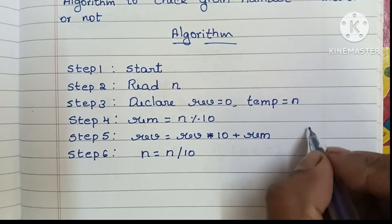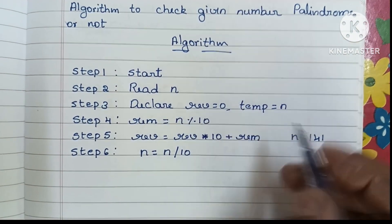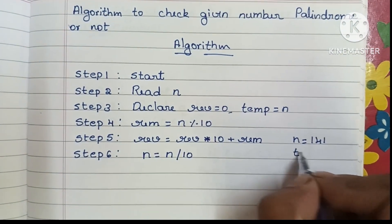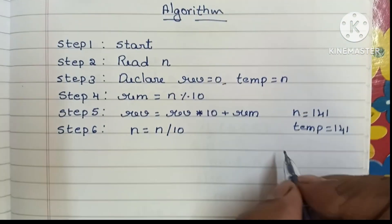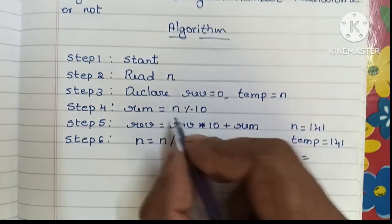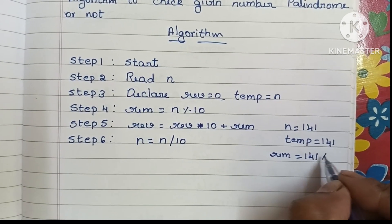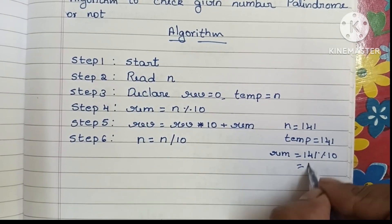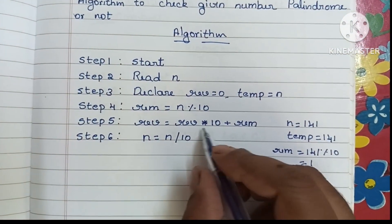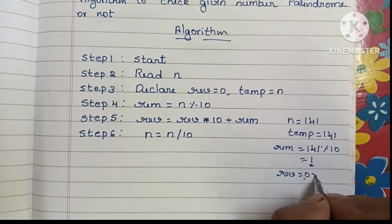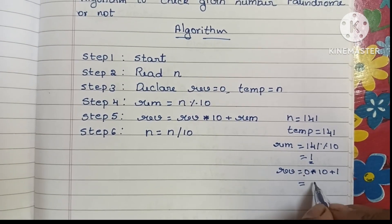For example, consider n equal to 141. We declare reverse equal to 0 and temp equal to 141. Now find the remainder: 141 modulo 10 gives remainder equal to 1. Next, find reverse: reverse = 0 into 10 plus 1, so reverse becomes 1.